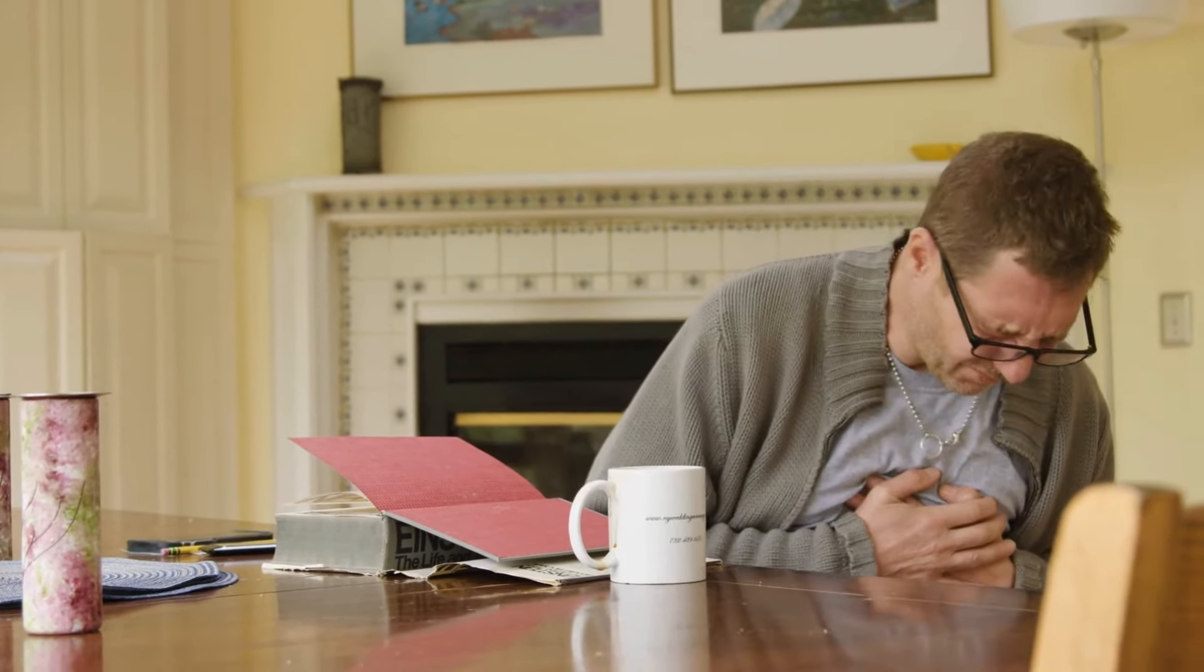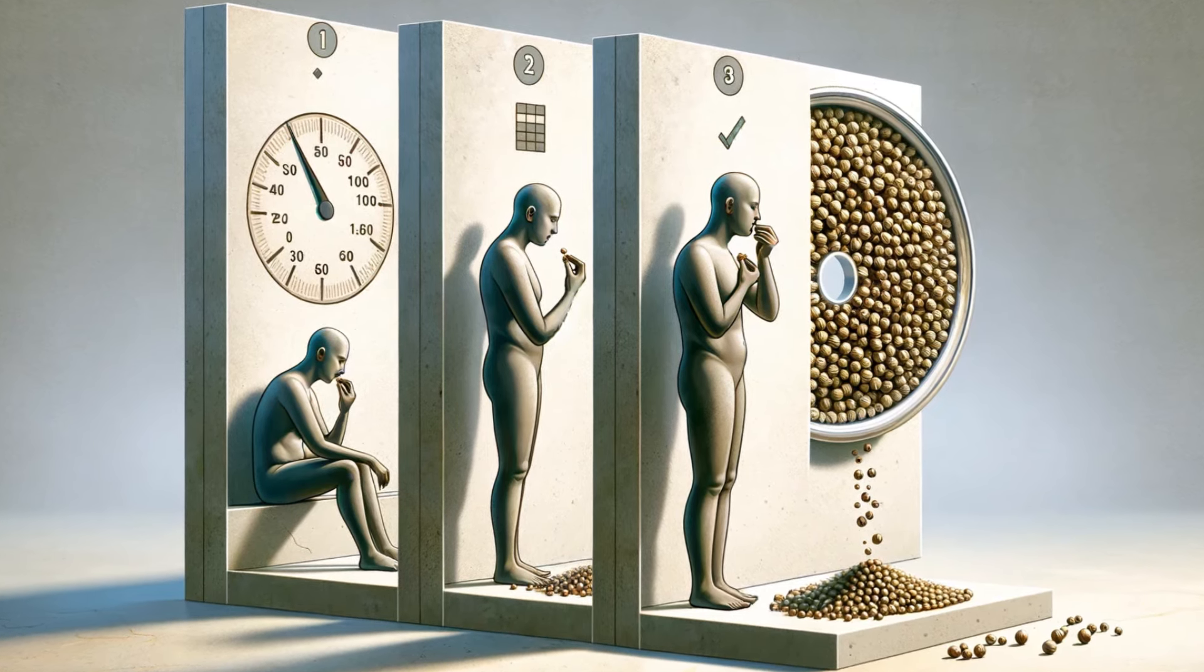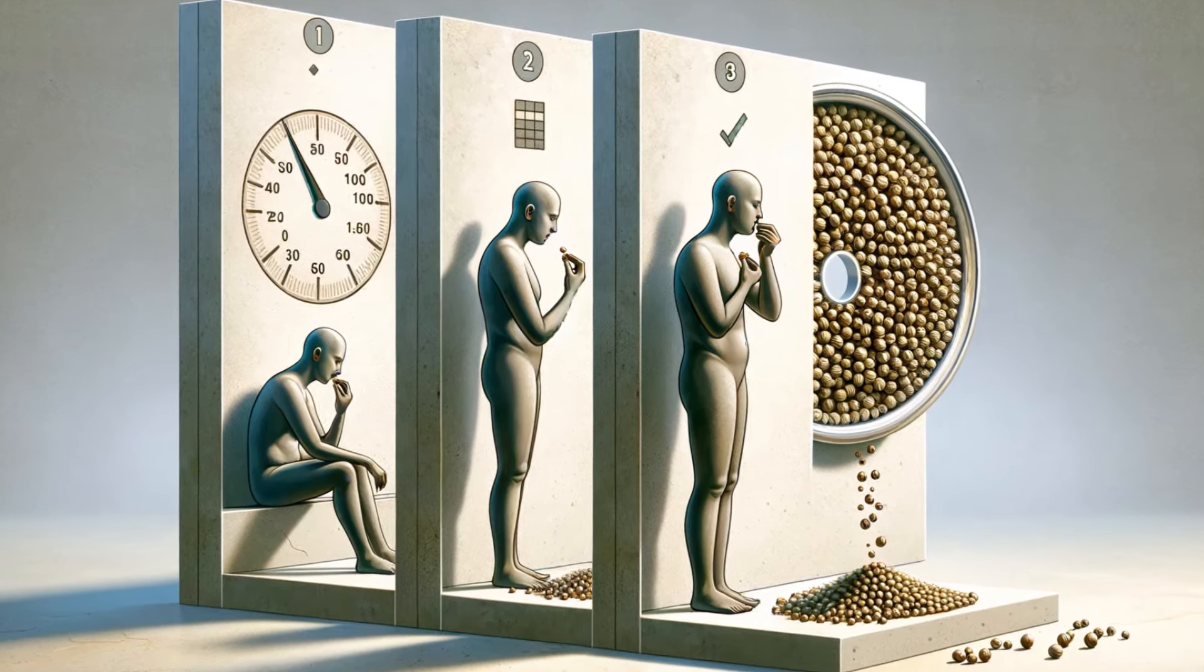The seeds can relax the lower esophageal sphincter, allowing stomach acid to escape into the esophagus and cause heartburn. It's recommended to observe how your body responds to coriander seeds and adjust your intake accordingly.